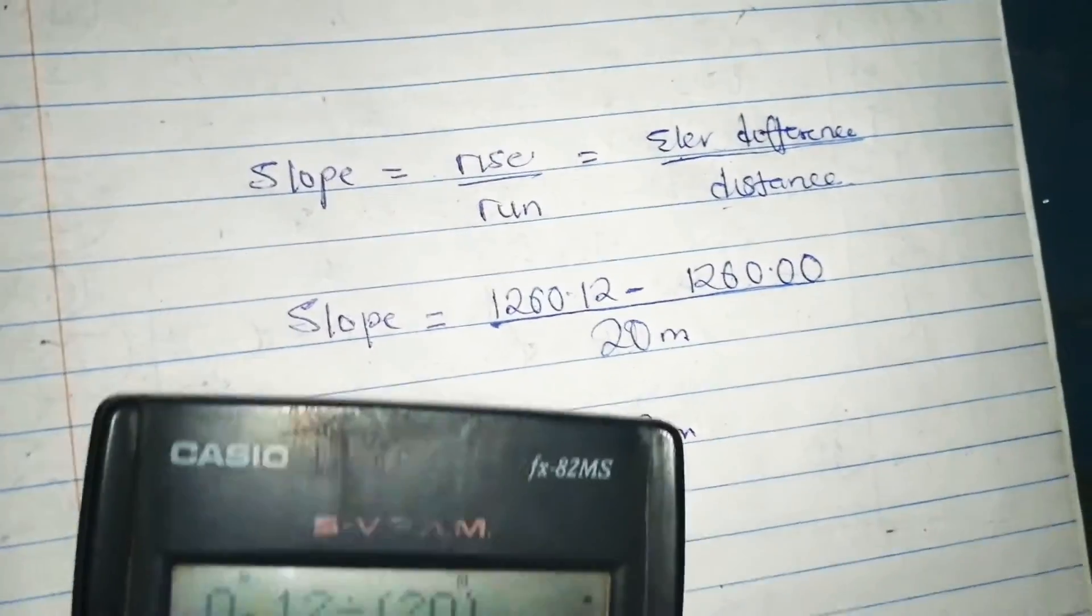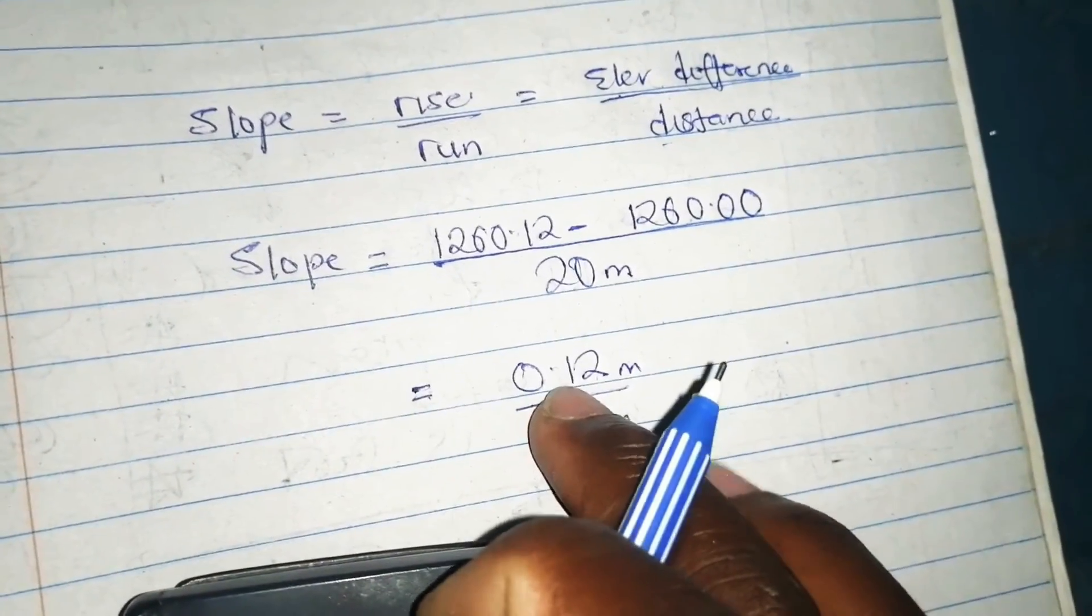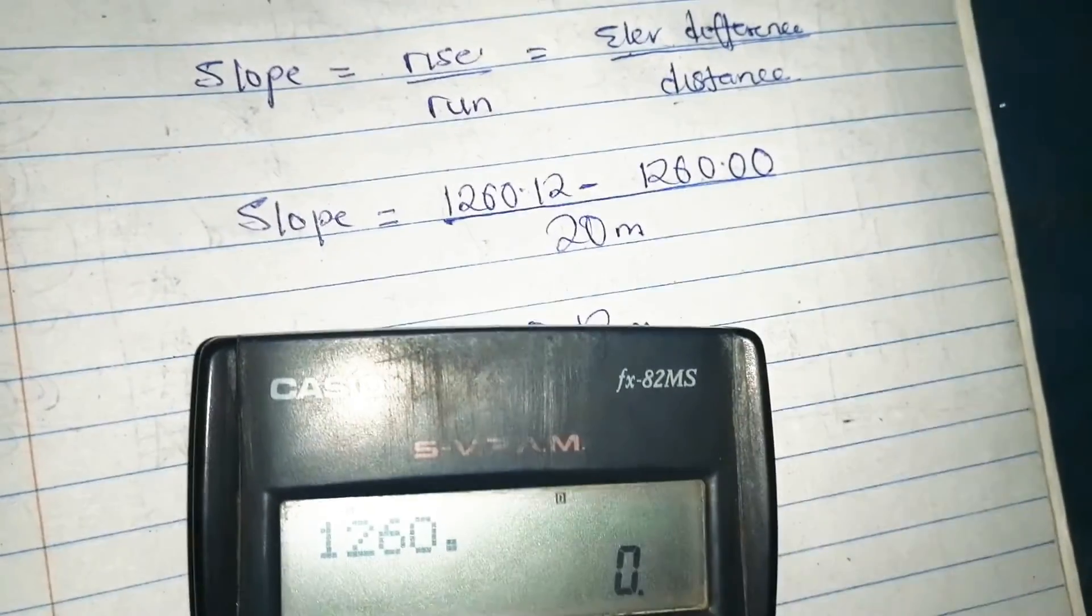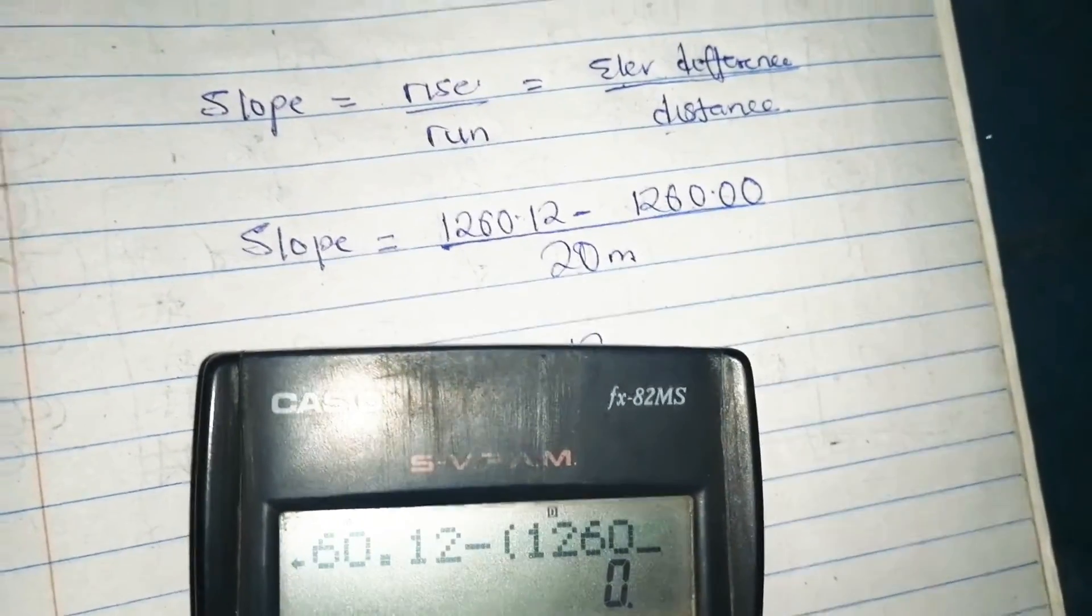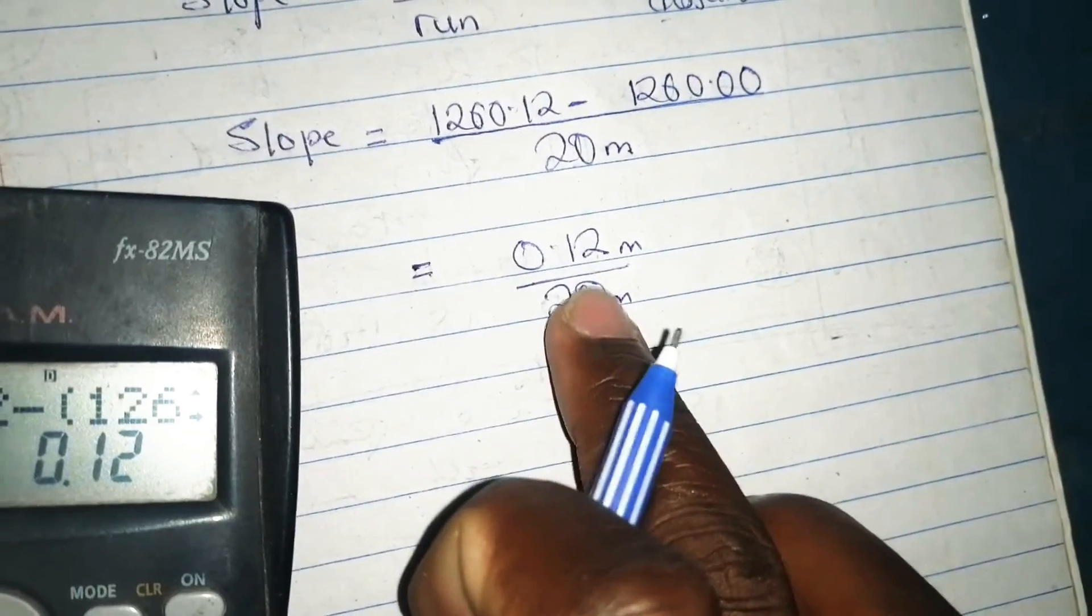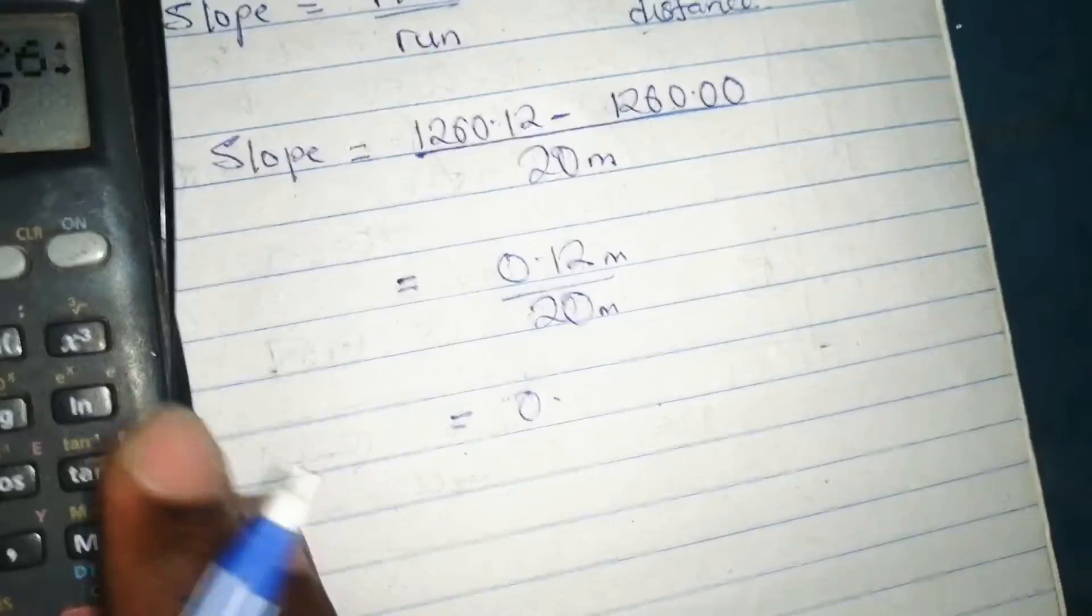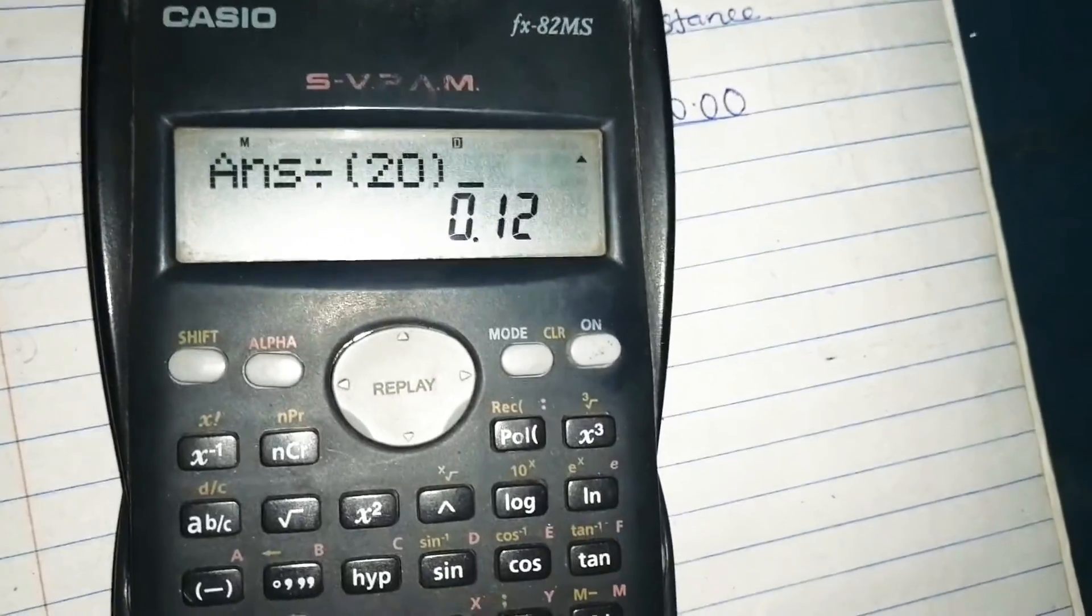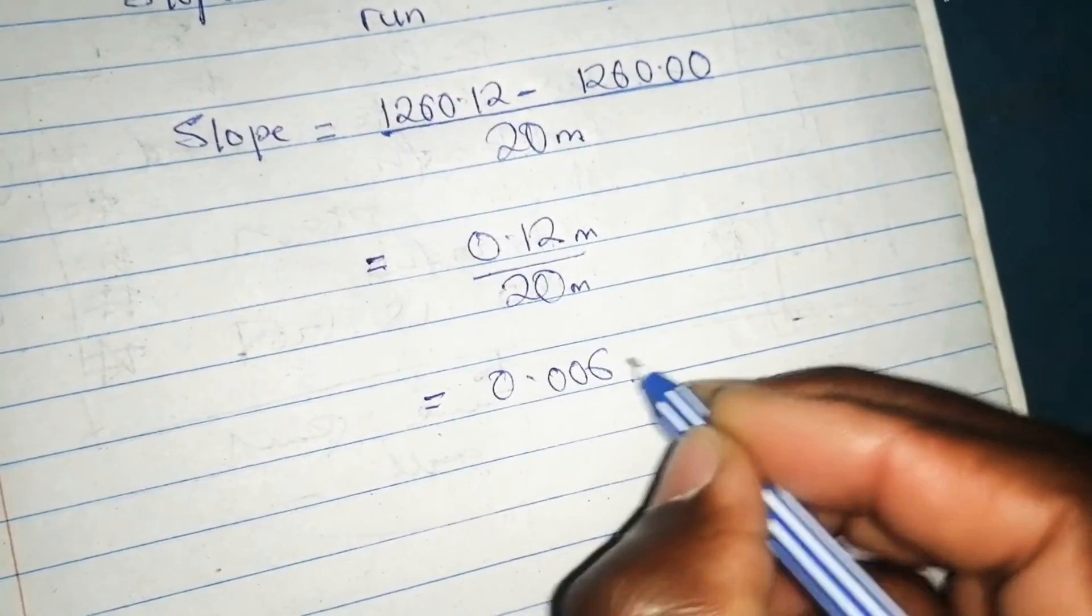Let me confirm that is 0.12. We have 1260.12 minus 1260.00, divided by 20 which is the distance. This gives us 0.006.